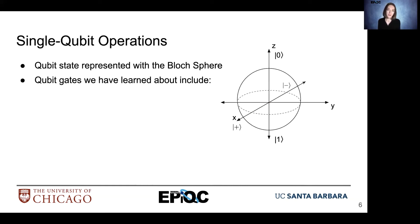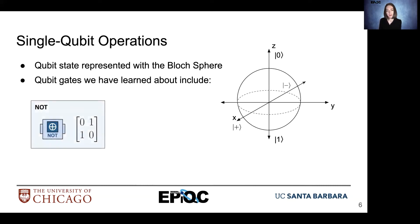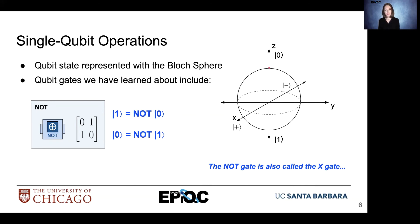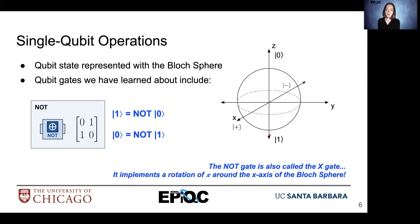How do single qubit operations appear on the Bloch sphere? We've learned about a couple of different gates, so let's start with the NOT operation. The NOT operation takes a qubit and swaps the probability amplitudes associated with ket zero and ket one. NOT applied to ket zero equals ket one, and NOT applied to ket one results in ket zero. We can see when we implement that gate on the Bloch sphere, we end up getting a rotation around the x-axis of pi, or 180 degrees. So we also call the NOT gate the X-gate because of that.